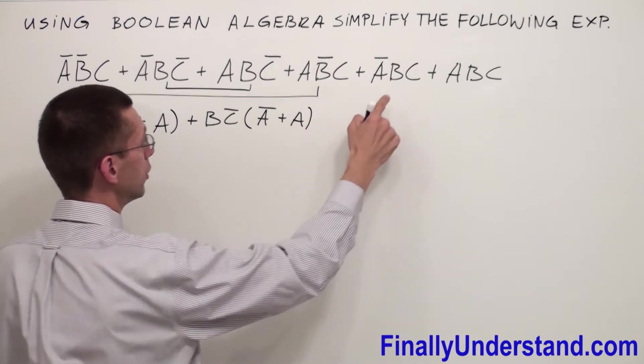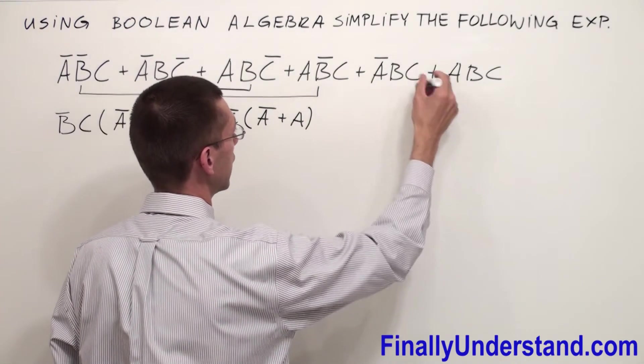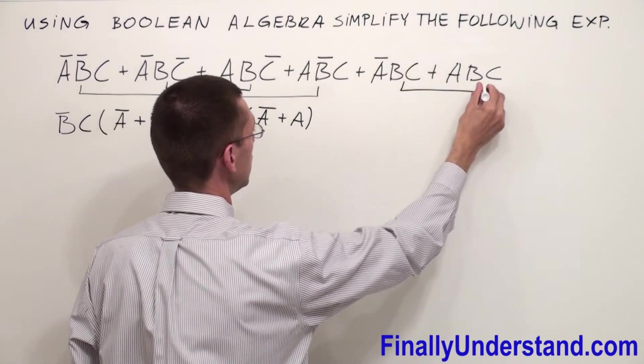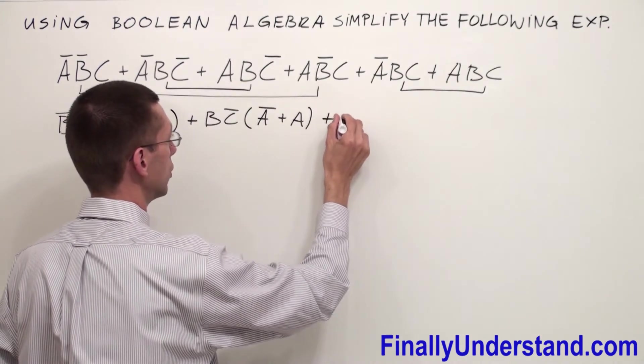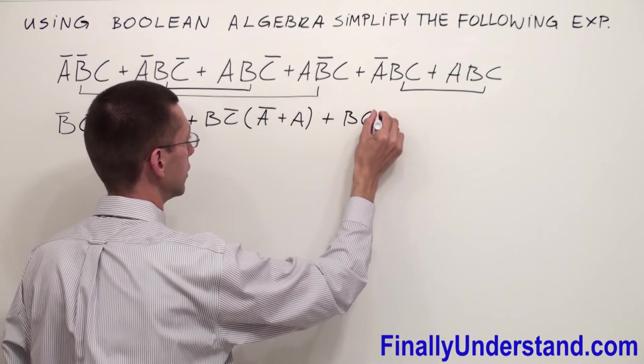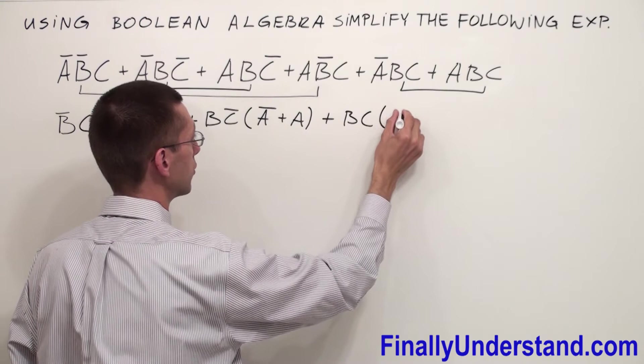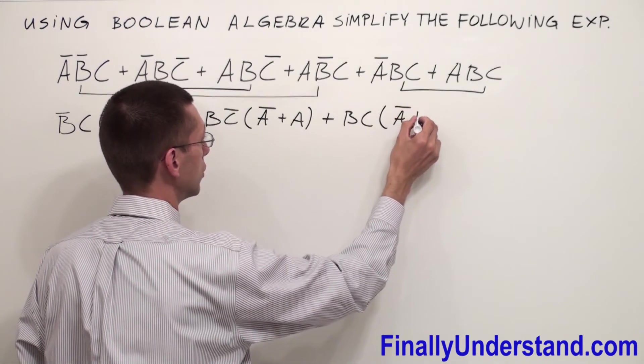From these two terms, I can factorize BC. That's why I'm going to write or BC. Inside of the parentheses, I'm going to have Ā or A.